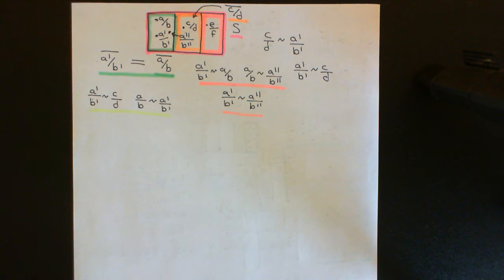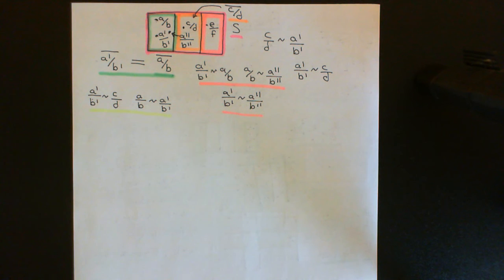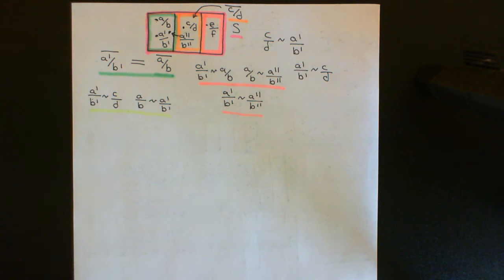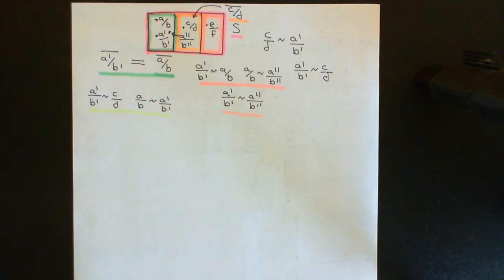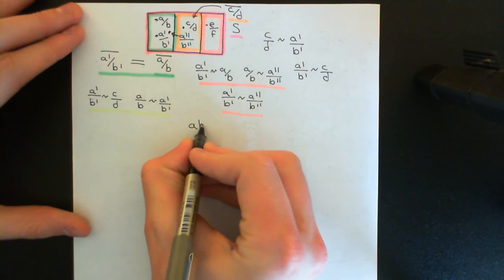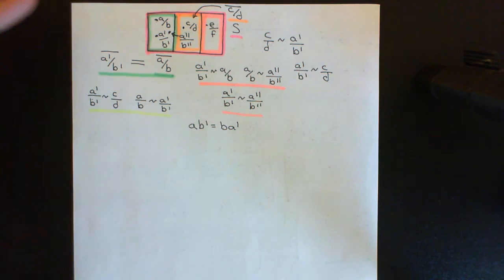We have now successfully partitioned up the set of all fractions — where the numerator and denominator are elements of our integral domain — into these equivalence classes, these subsets of all fractions that are equivalent to one another. The equivalence relation we've defined is exactly the relation we want intuitively: we've grouped together fractions that are equivalent to one another, fractions that we don't want to be considered as separate, where it is true that A times B prime equals B times A prime.